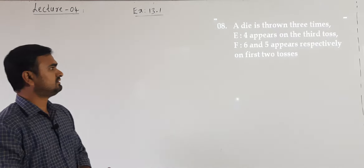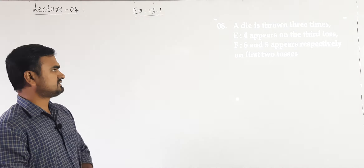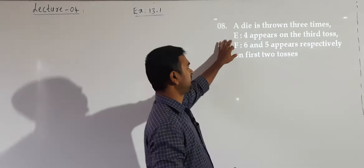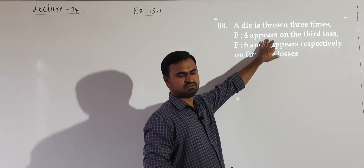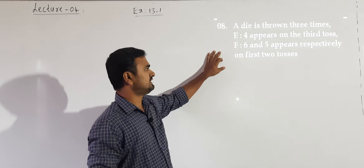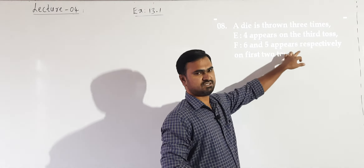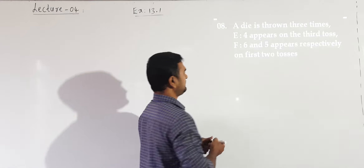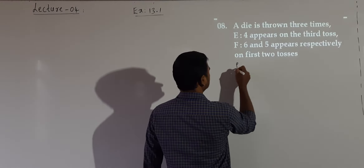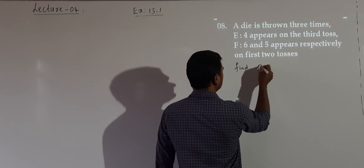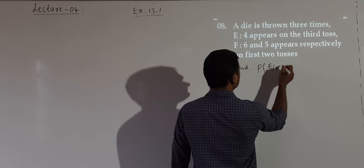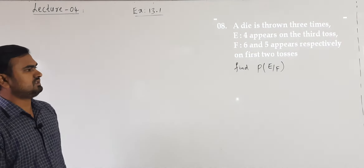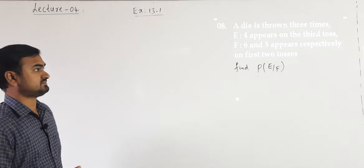See question number 8. A die is thrown three times. Events E and F are given: E is the event that 4 appears on the third toss, F is the event that 6 and 5 appear respectively on the first two tosses. We have to find the probability of E given F.